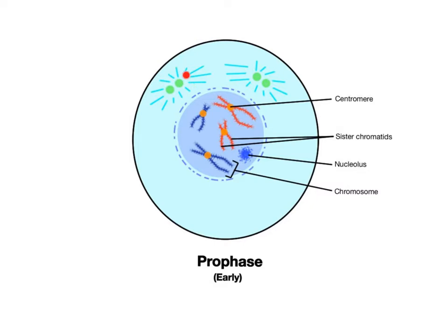The centrosomes, along with their centrioles, are beginning to migrate to opposite poles of the cell. The centrioles are synthesizing microtubules that will soon play a major role in mitosis.